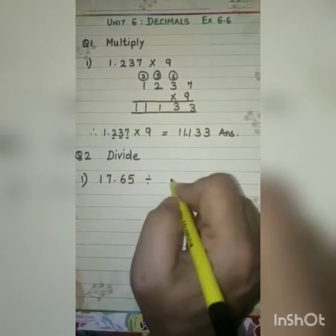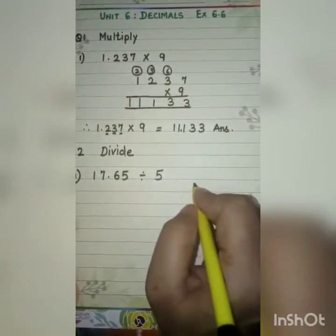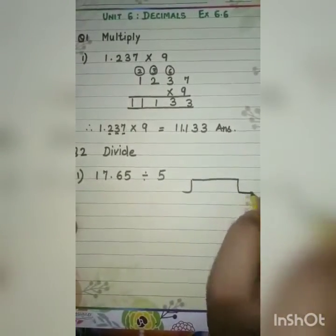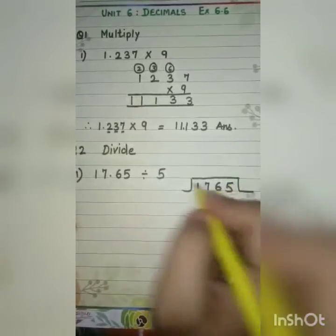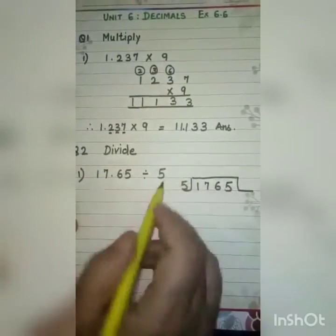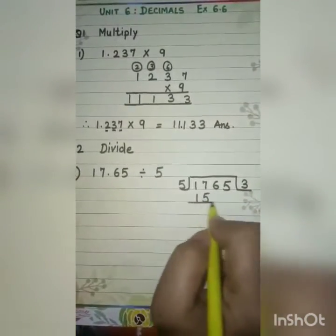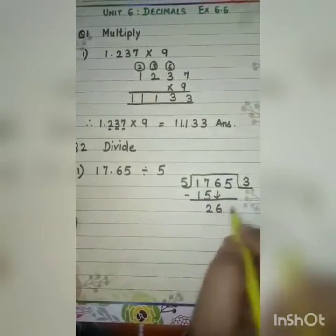The decimal number 17.65 divided by the whole number 5: write the decimal number without the decimal, and write the whole number here. Do simple division as you do with whole numbers.